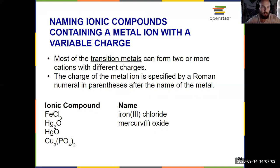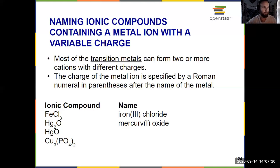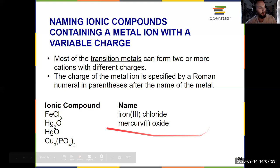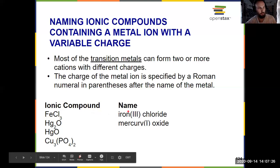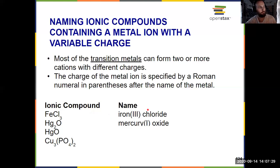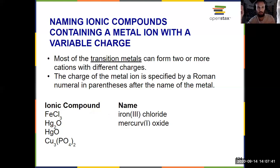If you have a transition metal, you have to specify its charge in the name by putting the charge using Roman numerals in parentheses. Make sure you know your Roman numerals: I for 1, II for 2, III for 3, IV for 4, and V for 5. So FeCl3 is iron(III) chloride, and Hg2O is mercury(I) oxide. You have to specify the charge because you can't just say iron chloride — FeCl2 also exists, and that would be iron(II) chloride.